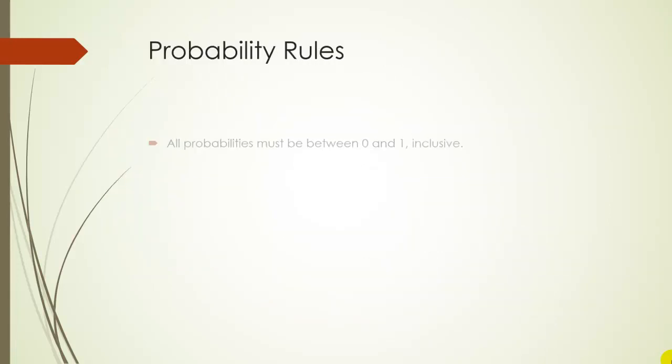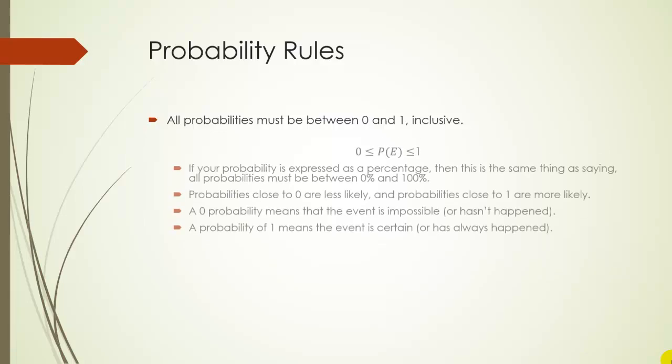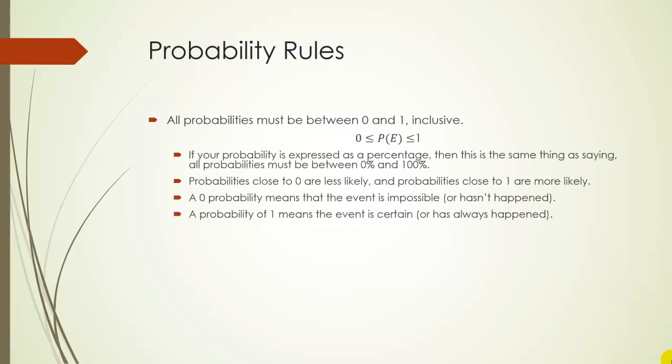Okay, so some basic probability rules. All probabilities must be between zero and one, including zero and one. It can be zero, can be one. If you're talking about percentages, it would be zero percent to a hundred percent. Probabilities that are close to zero are less likely. Probabilities that are close to one are more likely.